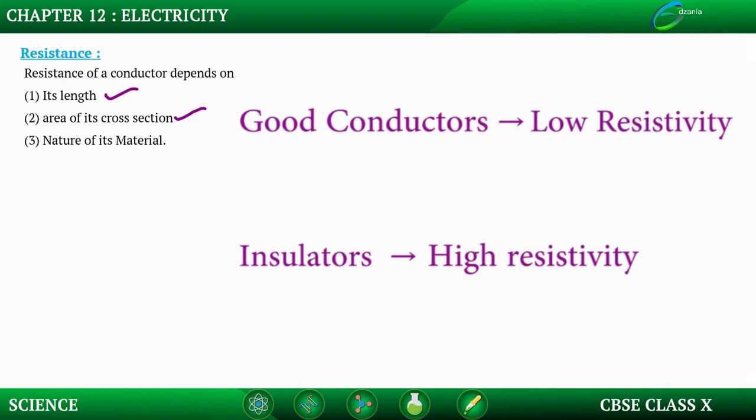Another thing when we discuss about resistance and resistivity is the temperature of the material. Temperature changes the lattice or the array of atoms in the conductor itself. That lattice of atom will affect the movement of the electron through it.